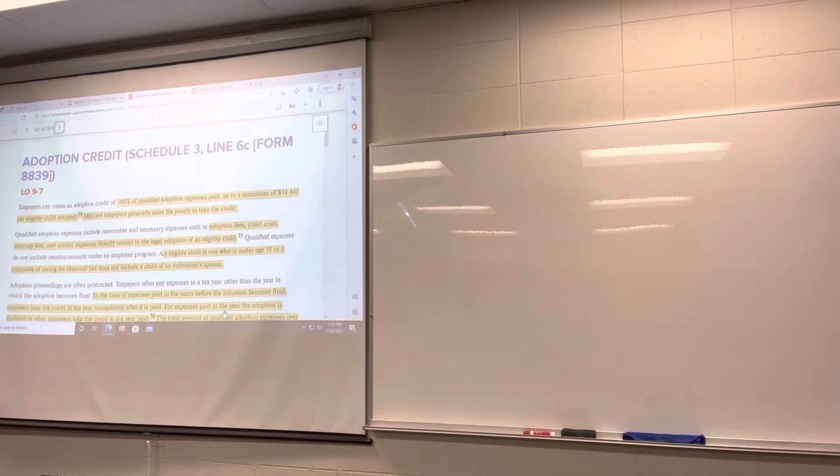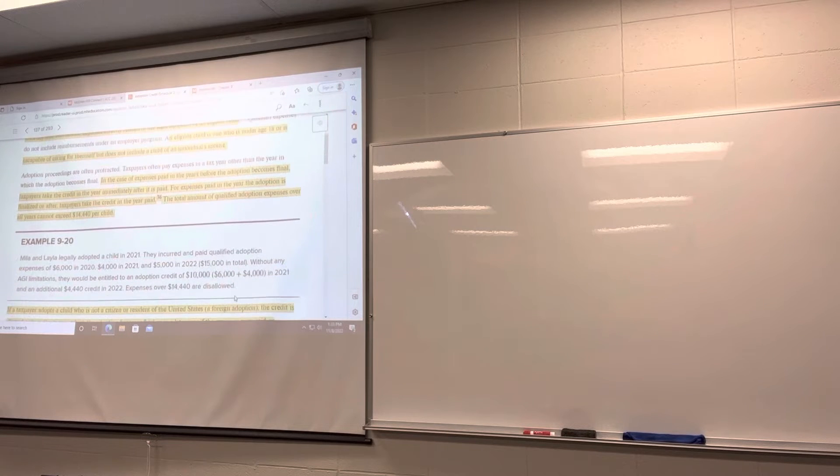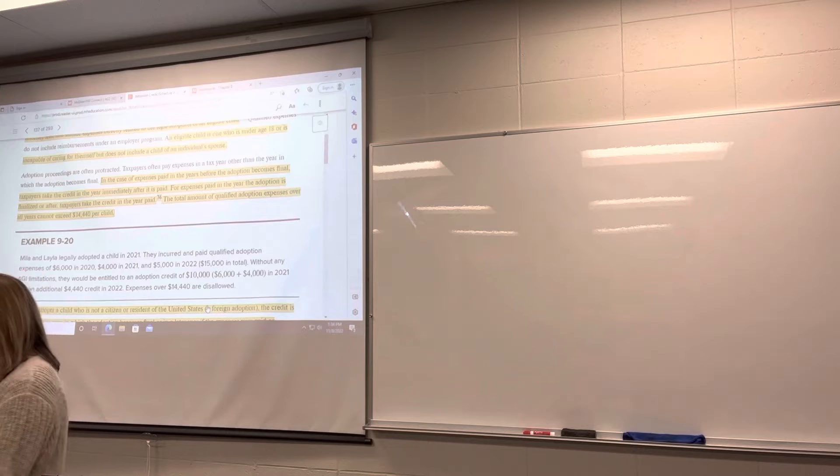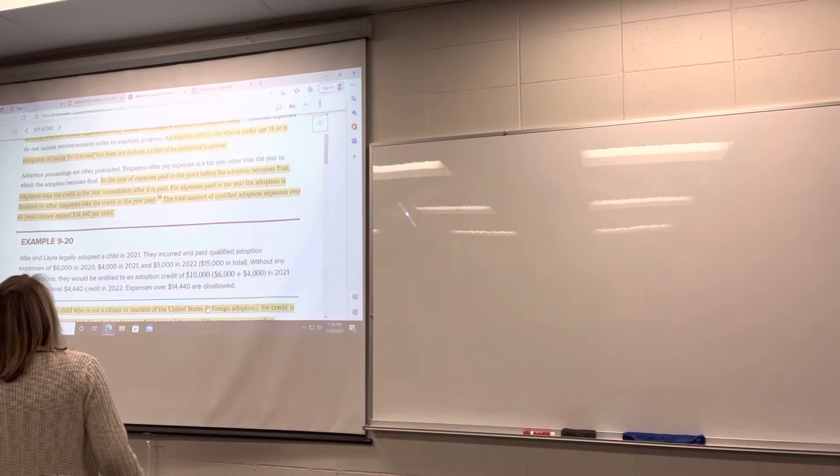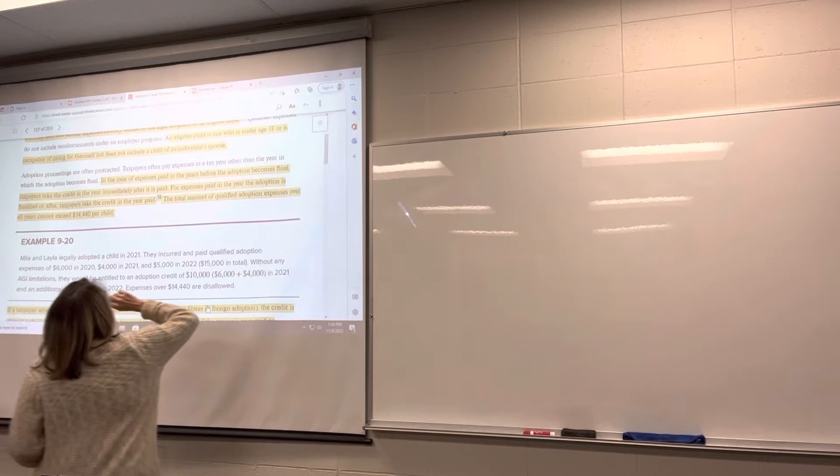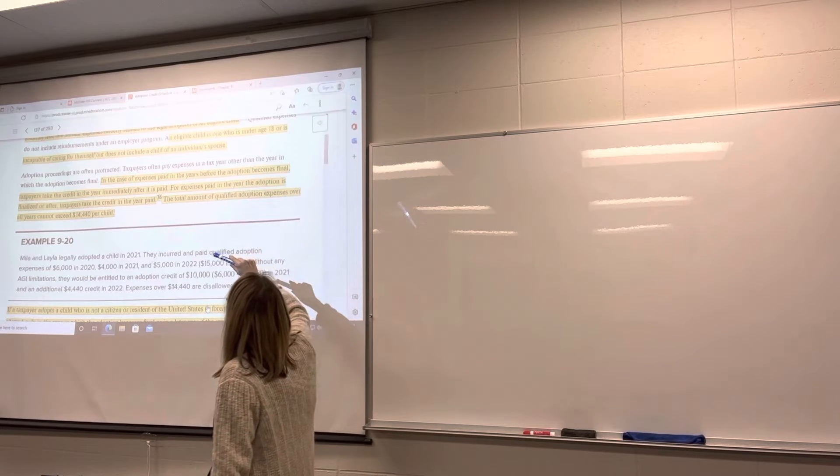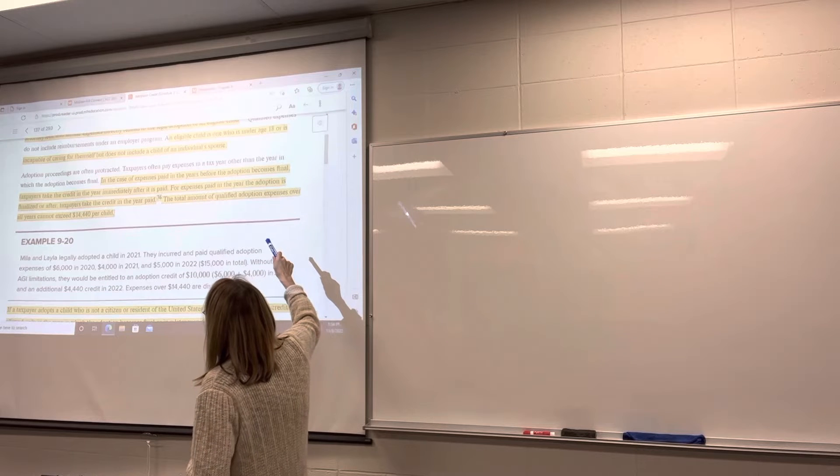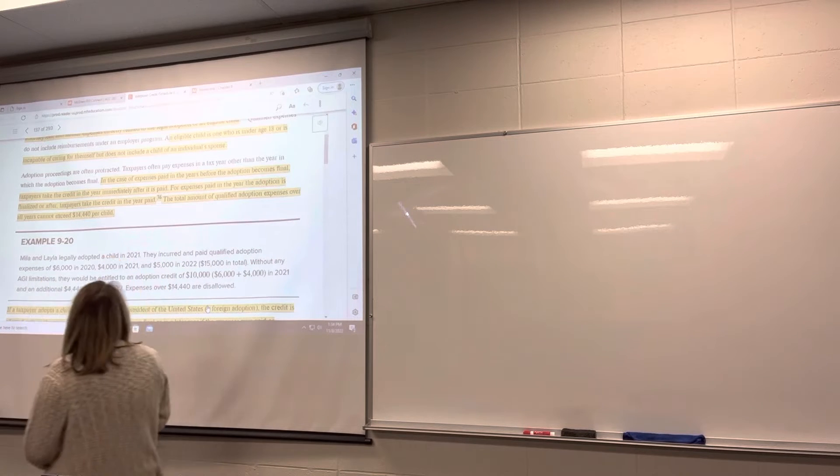Now, when do we take these expenses? Because adoptions are oftentimes protracted, take a long time. So there are certain specific rules for when you get to take this credit. The total credit is $14,440. That could be spread over one, two, or more years. But the credit is not on a per year basis, it's in total. Expenses paid in the years before adoption becomes final, you take the credit in the year immediately after it's paid.